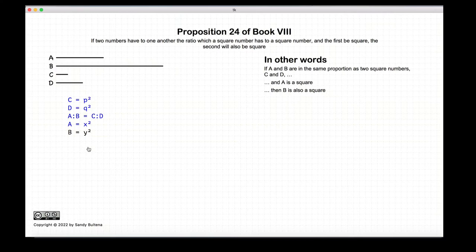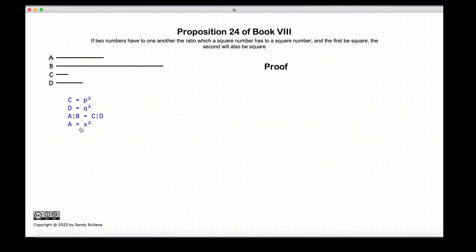So, let's prove this. Again, we're starting with C and D are squares. The ratio of A to B is equal to the ratio of C to D, and A is also a square.